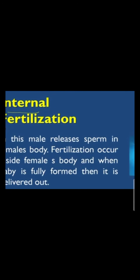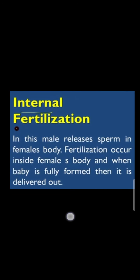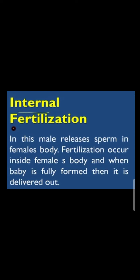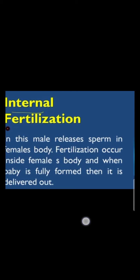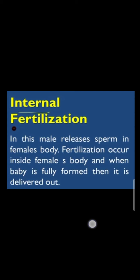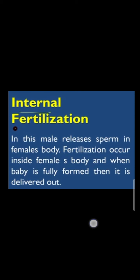The second type is internal fertilization. In this, the male releases sperm inside the female body, and fertilization occurs inside the female body. When the baby is fully formed, it is delivered out. This process is internal fertilization and internal development. However, there are also two types of development.